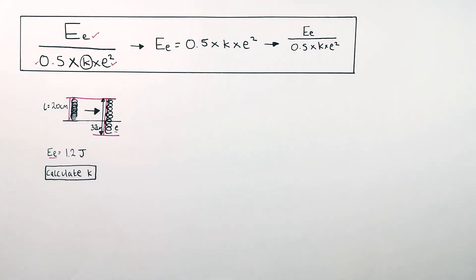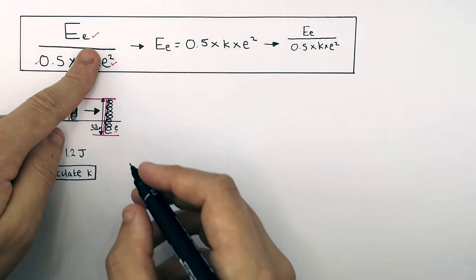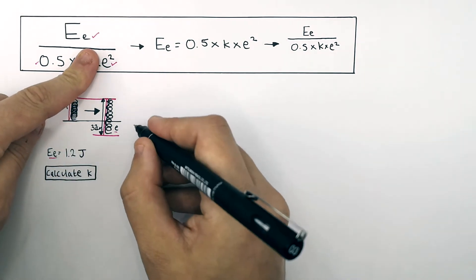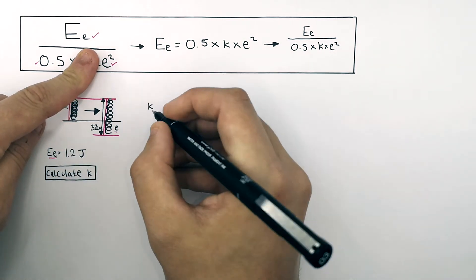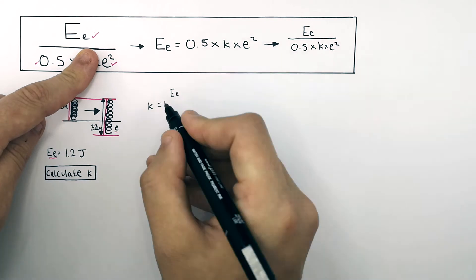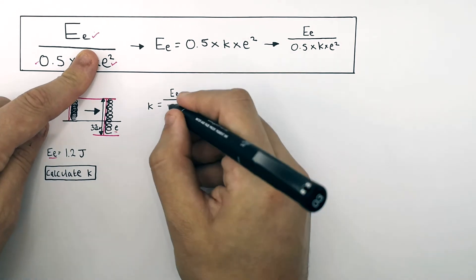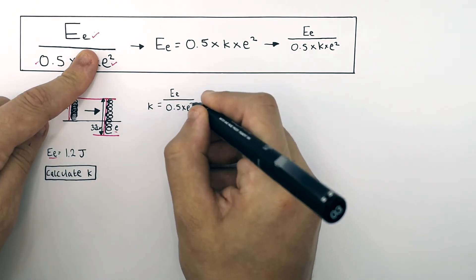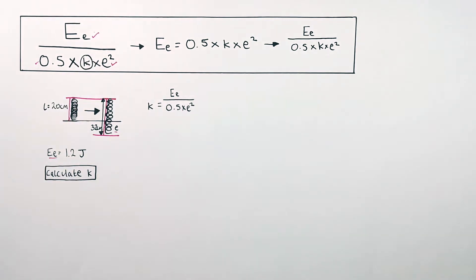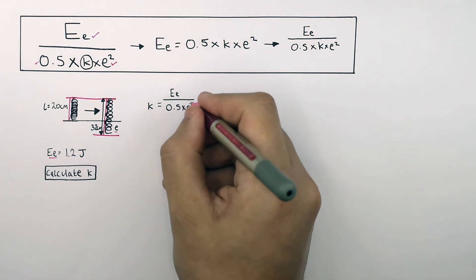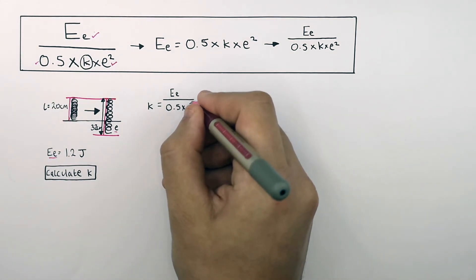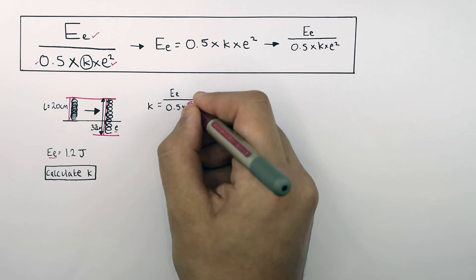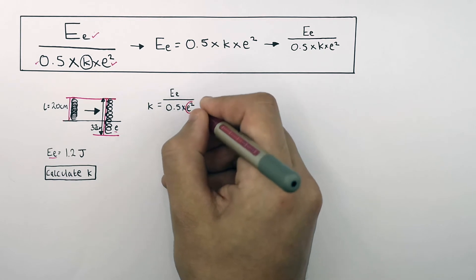How do you arrange the formula for k? If you cover k, you're left with k equals E divided by 0.5 times e squared. So the spring constant equals E divided by 0.5 times e squared.